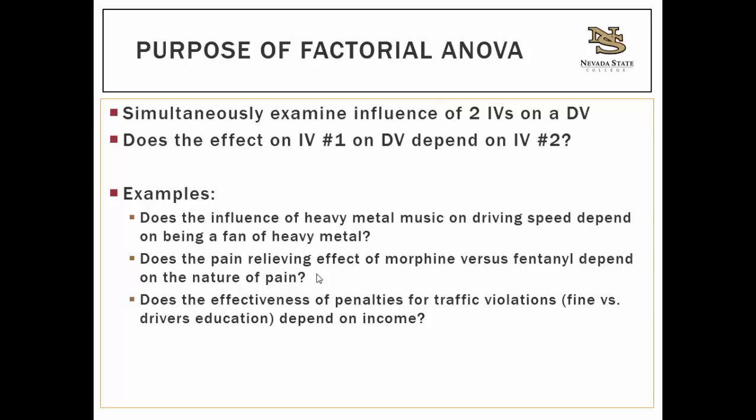The next example: does the pain-relieving effect of morphine versus fentanyl depend on the nature of the pain? In this example, drug is one independent variable with two levels — morphine versus fentanyl — and the nature of pain is the other independent variable. In the example problems, nature of pain would be acute versus chronic, and we're thinking those two things interact to predict pain relief.